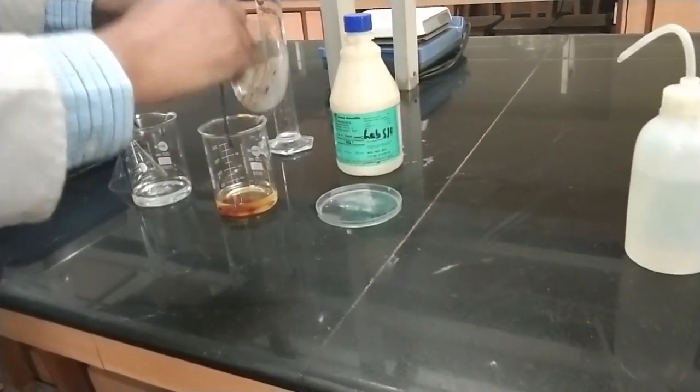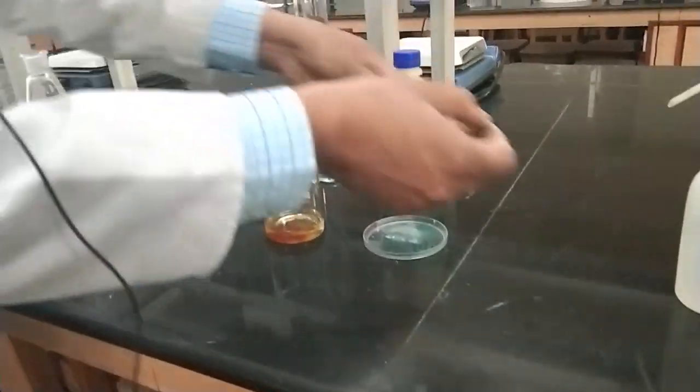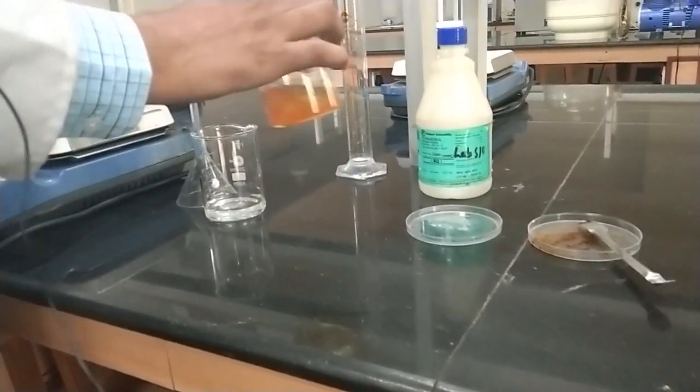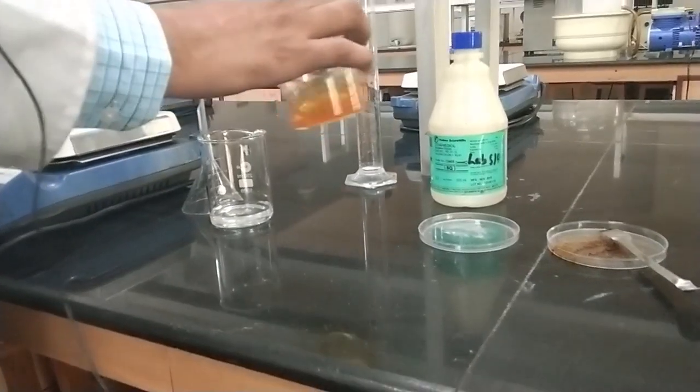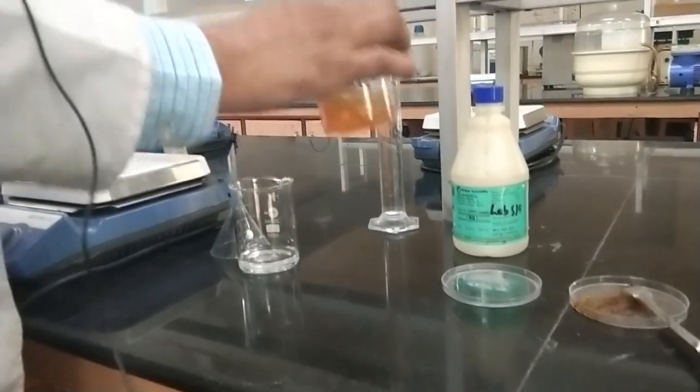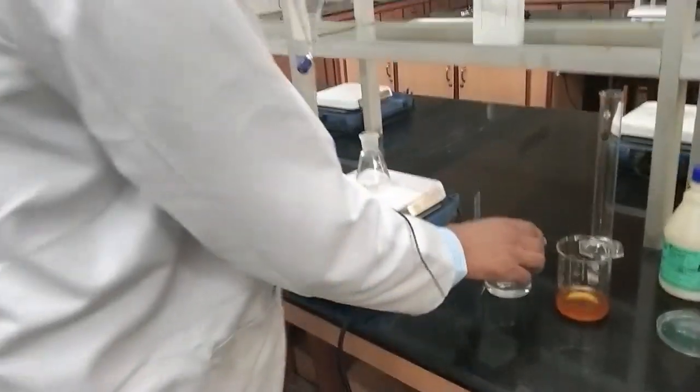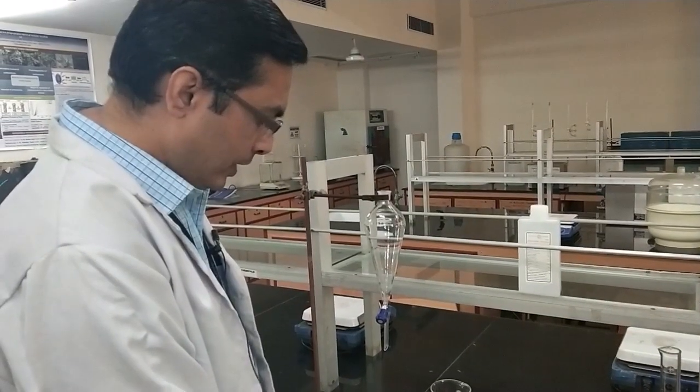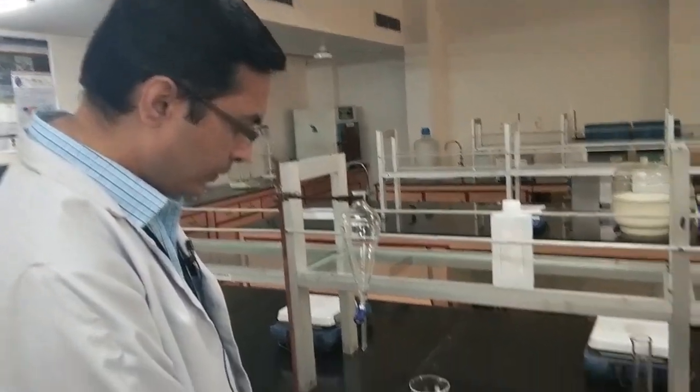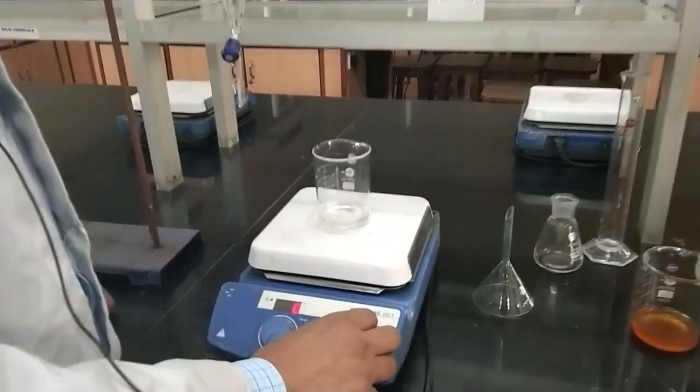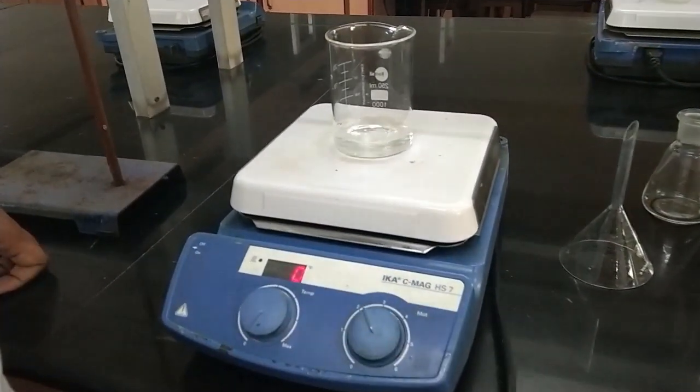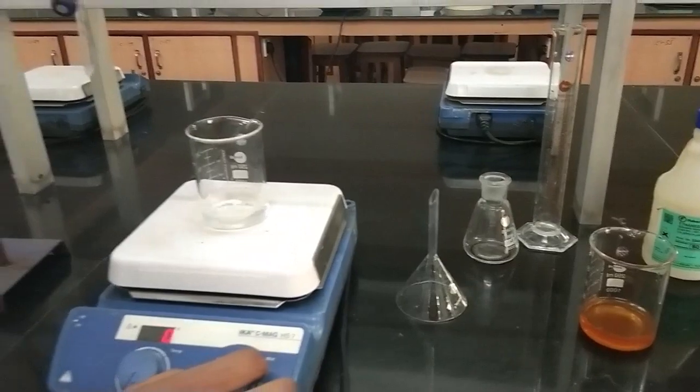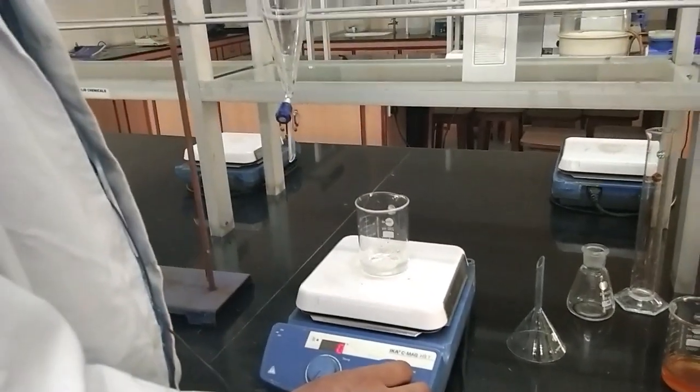Our iron 3 chloride solution is ready. However, the sodium pyrophosphate is taking a little bit more time to solubilize, so we need a little bit more stirring in order to completely solubilize it.